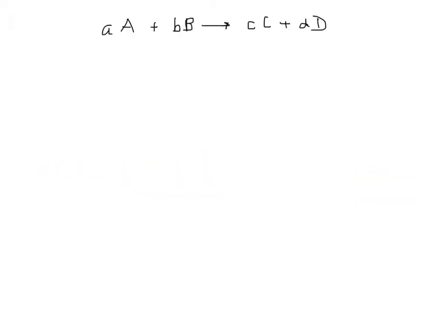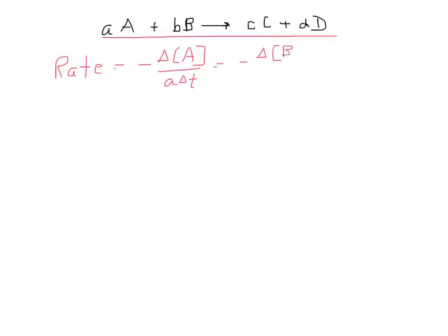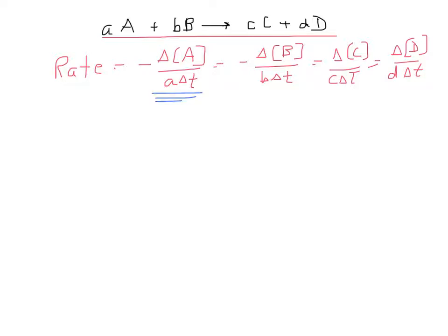For an equation of the general form aA + bB → cC + dD, where the lowercase letters are the coefficients and the capital letters are the reactants and products, the rate for any reaction is: minus the change in concentration of A over little a times delta T, minus the change in concentration of B over little b times delta T, equals the change in concentration of C over c times delta T, equals the change in concentration of D over d times delta T. Keep in mind that reactants are always being used up and products are always being produced — so negative and positive.